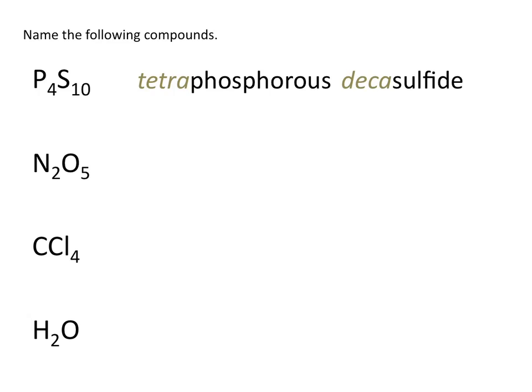This would be a great place to pause this tutorial and practice naming these compounds on your own. N2 means dinitrogen, and O5 becomes pentoxide. Remember the prefix for 5 is penta, but because the name of the element starts with a vowel, we drop the a. And again, the ending of oxygen gets changed to ide.